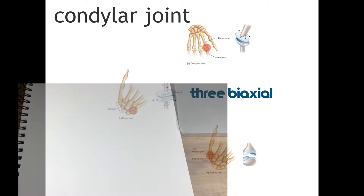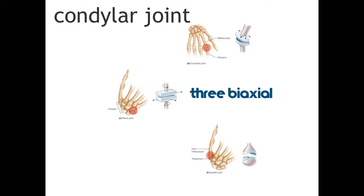The plane joint allows just a little bit less movement. These are the joints found in some of the wrist bones and also in the ankle bones. They allow for some biaxial movement but not a lot — which is typically why you'll sprain an ankle or wrist if you land on it wrong.